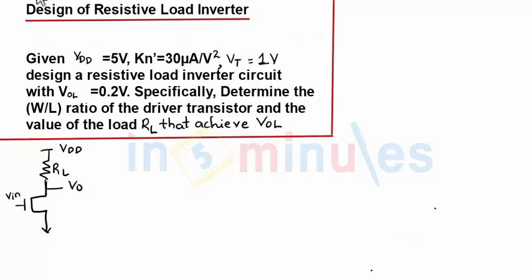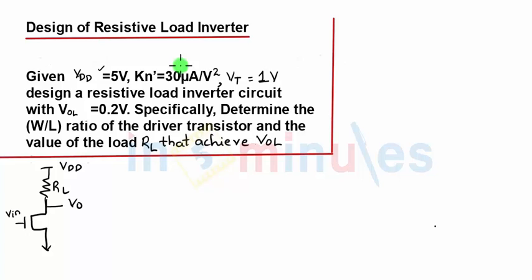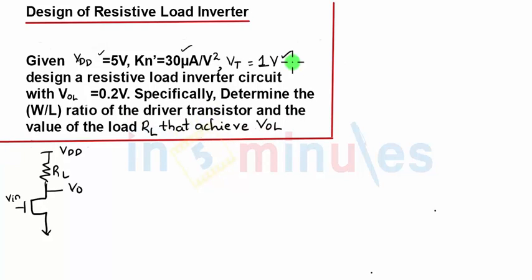Welcome to In 5 Minutes. The agenda of this clip is to understand the design of a resistive load inverter. We have been given the value of VDD equal to 5 volts, KN equal to 30 microamperes per volt squared, threshold voltage is 1 volt, and VOL equal to 0.2 volts.